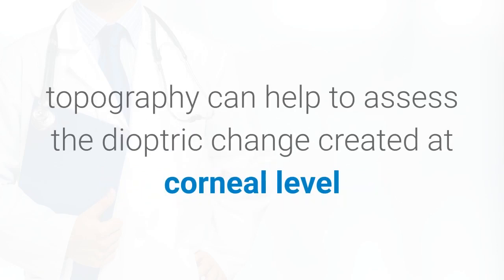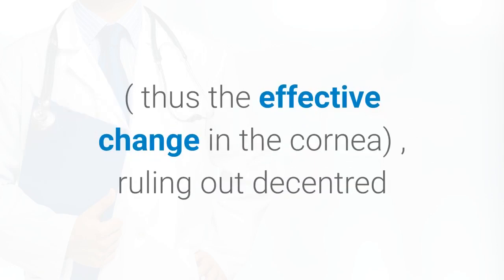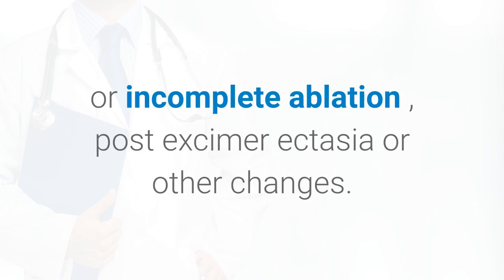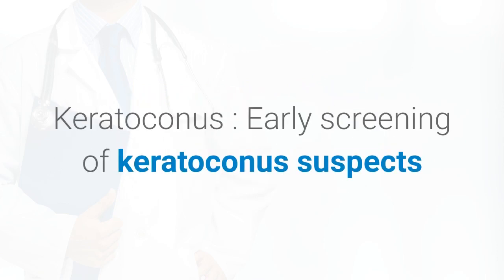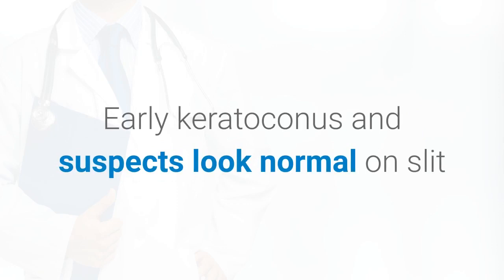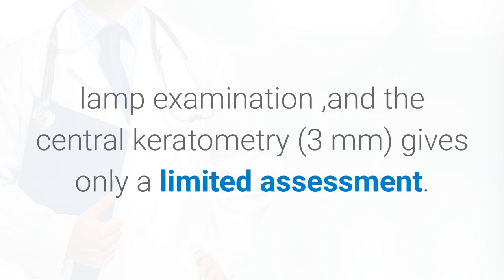Post-operatively, topography can help to assess the dioptric change created at the corneal level, thus the effective change in the cornea, ruling out decentered or incomplete ablation, post-excimer ectasia, or other changes. Early screening of keratoconus suspects is one of the most useful roles of topography, as early keratoconus and suspects look normal on slit lamp examination and the central keratometry over three millimeters gives only a limited assessment.